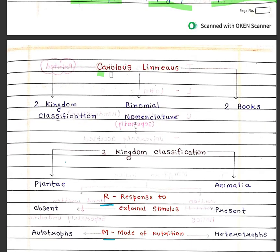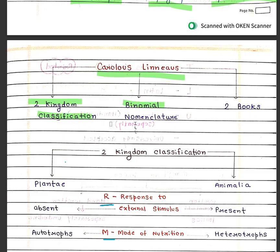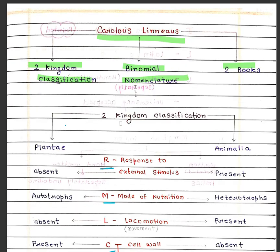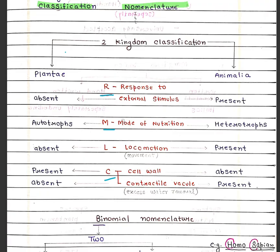Carlos Linnaeus gave two kingdom classification, binomial nomenclature, and two books. The two kingdom classification is divided into Plantae and Animalia, differentiated on the basis of: response to external stimuli, mode of nutrition, locomotion, cell wall, and contractile vacuole.